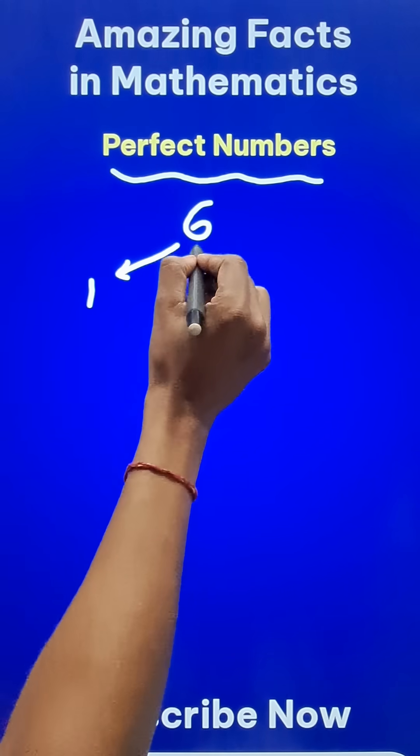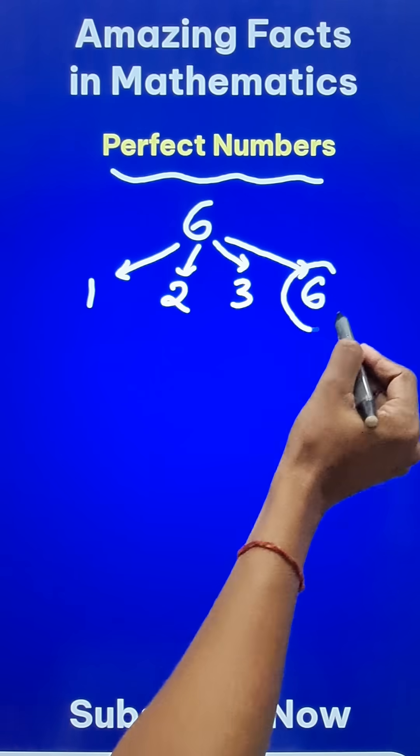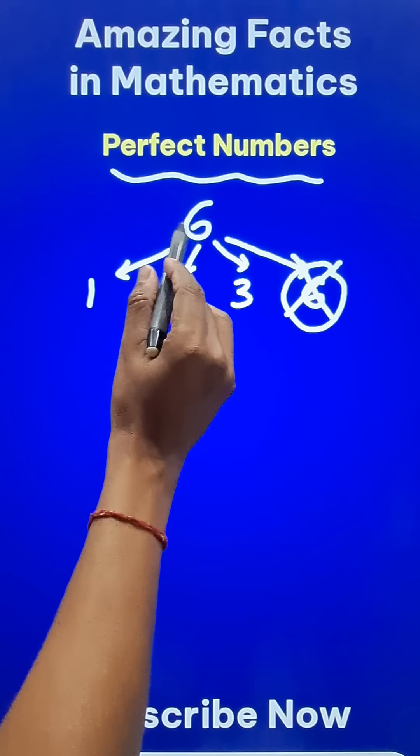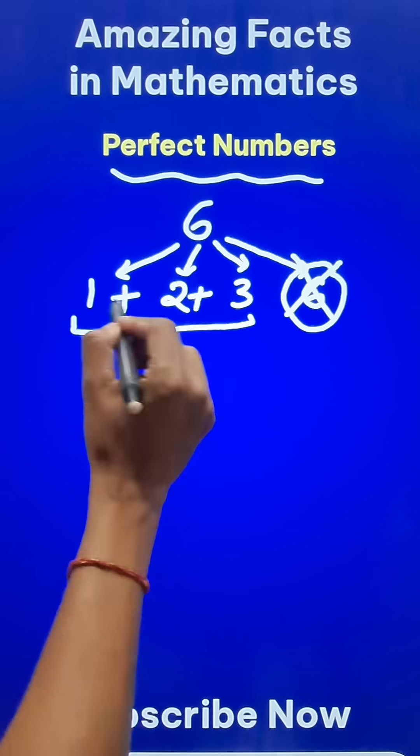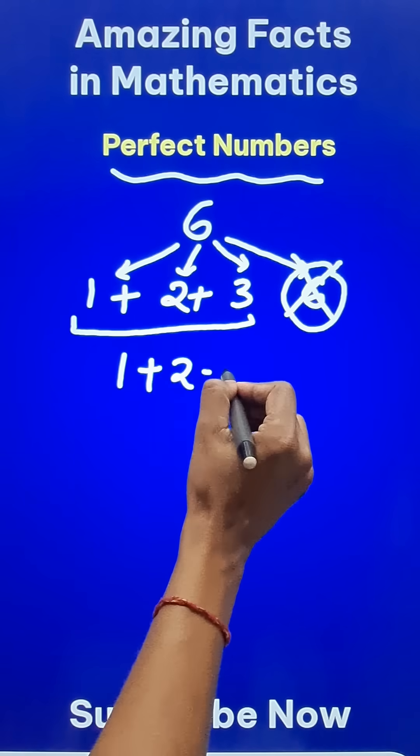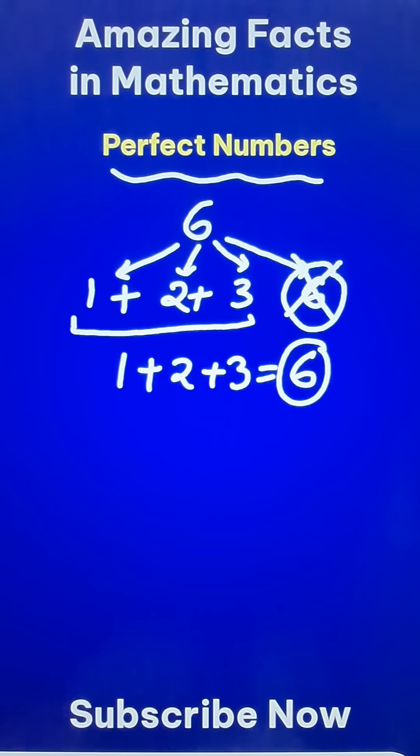6 is divisible by 1, 2, 3, and 6. So leave the number itself, we don't want the number itself. All other factors add up to - see, 1 plus 2 plus 3 gives us the number itself, 6, and therefore 6 is a perfect number.